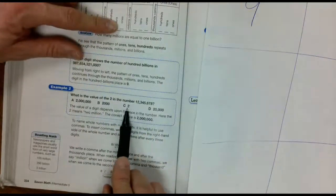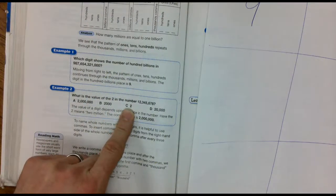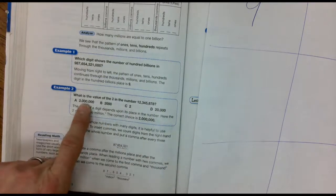The two is in the one million spot. Well, that two is definitely not worth two. Could you imagine having two million dollars and the banker says, oh, here's two dollars. No, no, no. I got two million dollars.